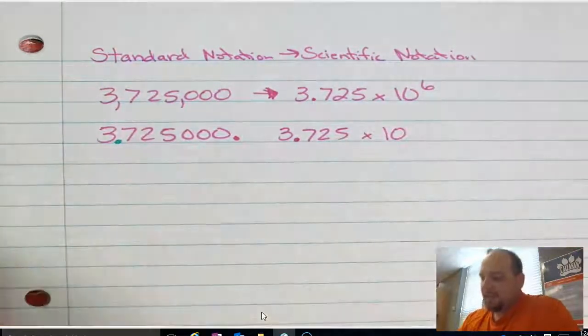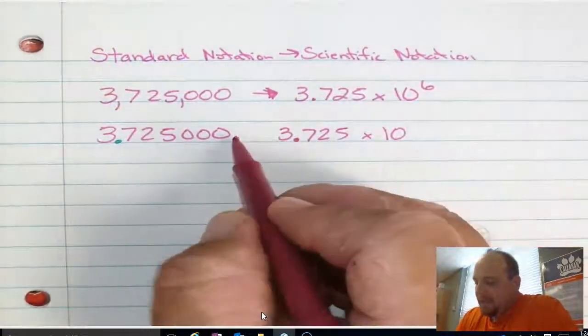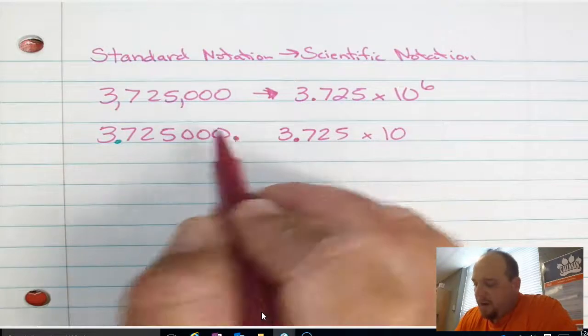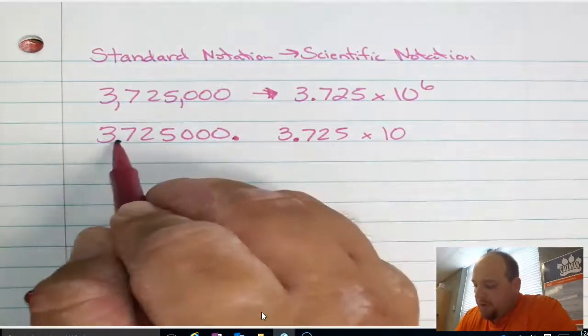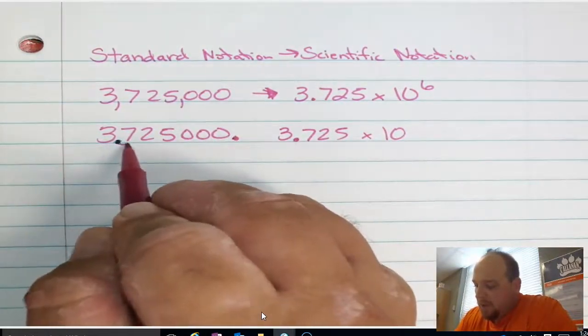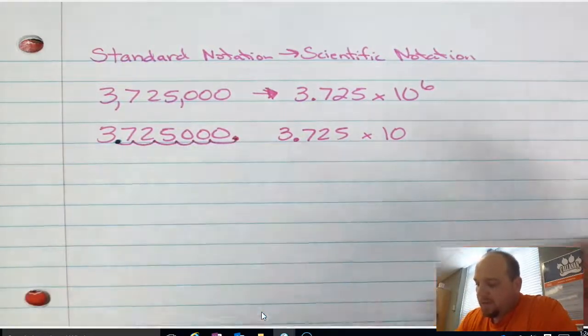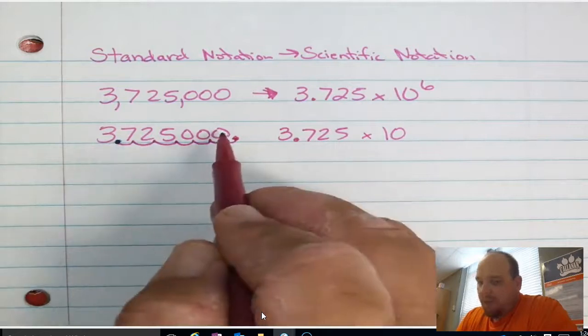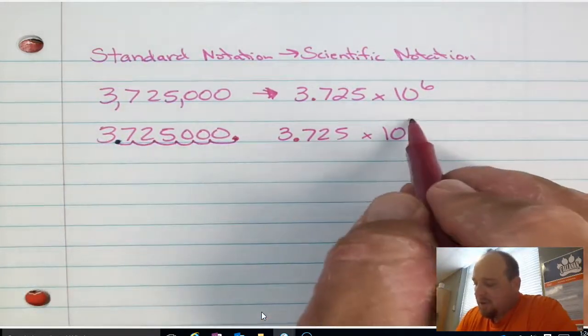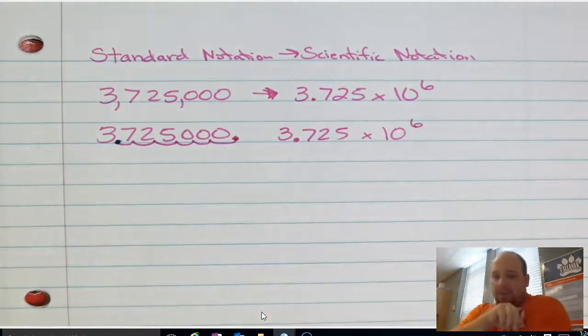So now how did I get the 6? Well, I got the 6 because I looked at this and I just count how far it moved. So if I go here, if I moved from here to here, I would go 1, 2, 3, 4, 5, 6. Notice that I moved right from that blue dot to the red dot. So as a result, that's a positive exponent.